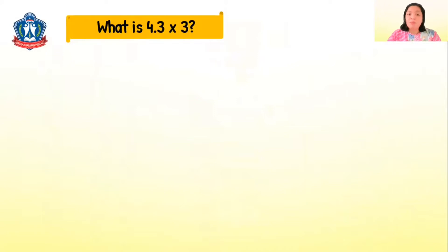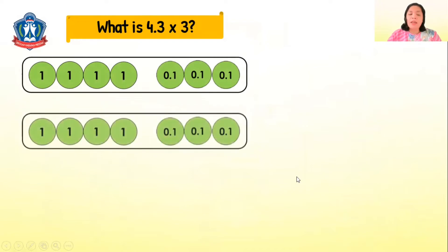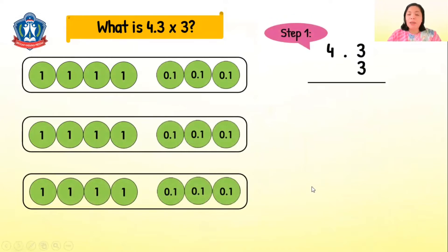Another example: let's multiply 4.3 times 3. 4.3 means 4 ones and 3 tenths. When we multiply by 3, we need three sets of 4.3. Step one: multiply the tenths first. 3 tenths times 3 is equal to 9 tenths.